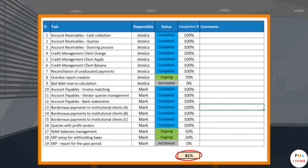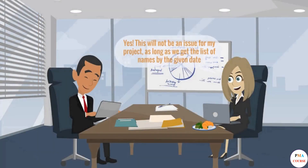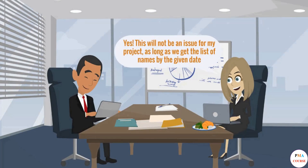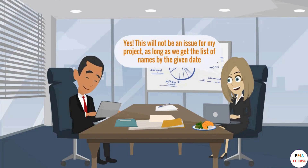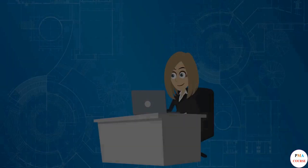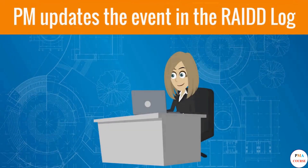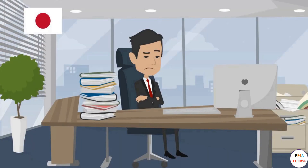This means we can provide the names the following week. Our project manager answers: 'This will not be an issue for my project as long as we get the list of names by the given date.' Our project manager then updates the event in the RAID log.